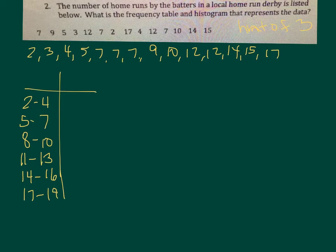And then how many numbers are between 2 and 4? 1, 2, 3. 5 and 7: 1, 2, 3, 4. 8 and 10: 1, 2. 11 to 13: 1, 2. 14 to 16: 1, 2. And 17, 19: 1.